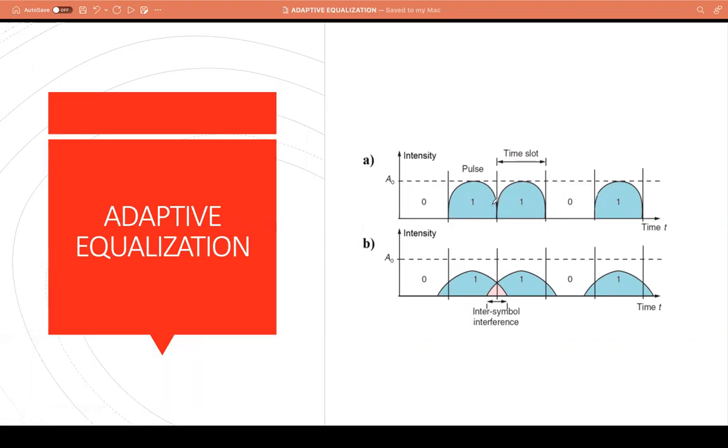For example, if we consider the pulse that is transmitted here, we transmit 0, 1, 1, 0, 1. So when these set of pulses are transmitted, some of the pulses undergo reflection, refraction, diffraction, etc. As a result they get delayed. By the time they reach the receiver, some of these pulses are delayed.